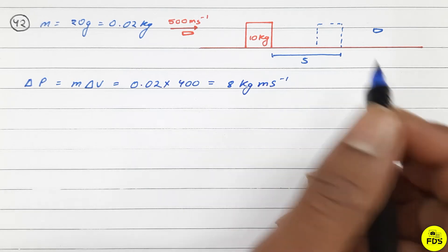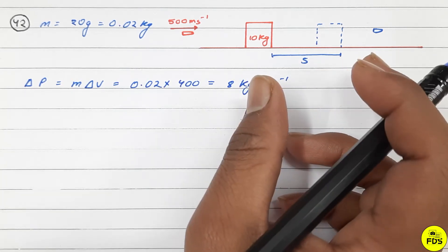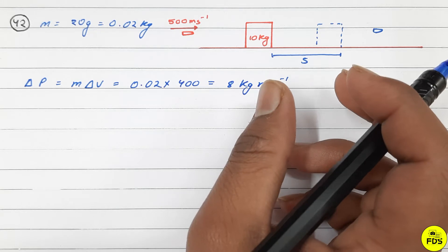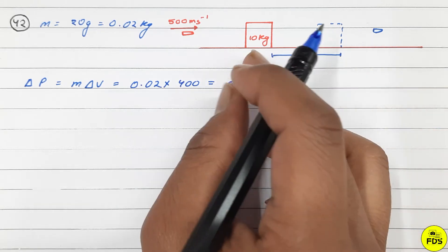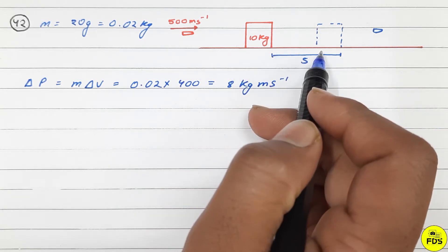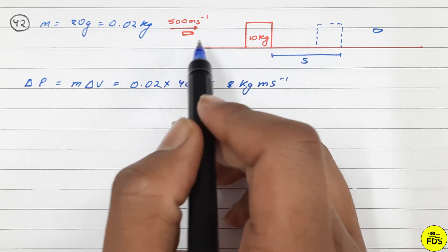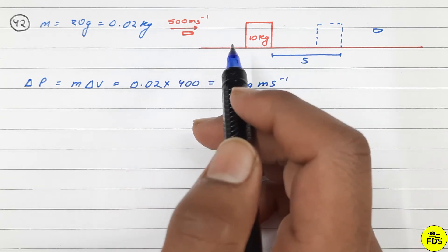Now we know that in an isolated system, momentum is conserved. So the change in momentum of the bullet equals the momentum gained by the block.